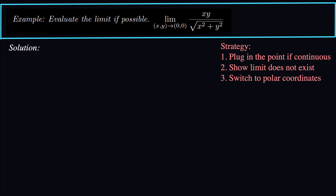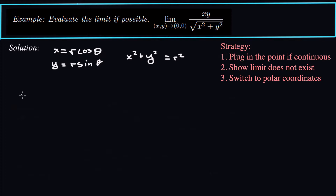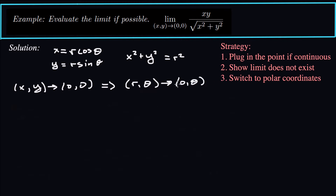So what we're going to do is convert to polar coordinates — that's our third strategy. We'll use x equals r cosine theta, y equals r sine theta, and x squared plus y squared equals r squared. If x and y are both going to zero, then the radius r goes to zero, so r comma theta goes to zero comma theta. Theta can be anything; r just has to go to zero to make the xy pair go to zero, zero. We'll plug all this into our limit and convert to polar coordinates.